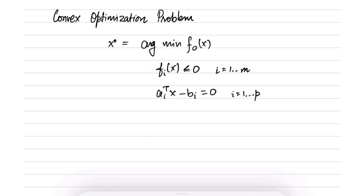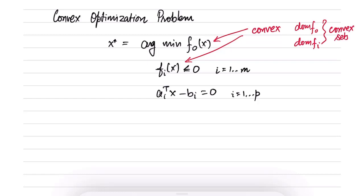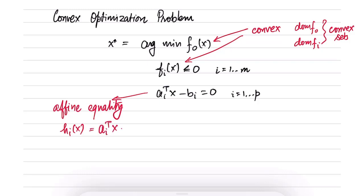The requirements here are that the functions f0 and fi of x are convex, which means that their domains are convex. The domain of f0 and domain of fi are all convex sets, and also that fi and f0 are convex functions. Additionally, we are not allowing any general equality constraints — in fact we are only allowing affine equality constraints. So hi is of the specific form ai transpose x minus bi for any ai and bi. This is the standard form of a convex optimization problem.